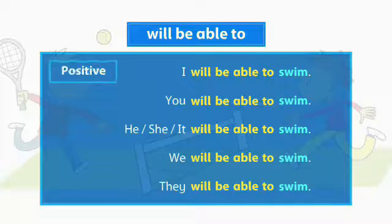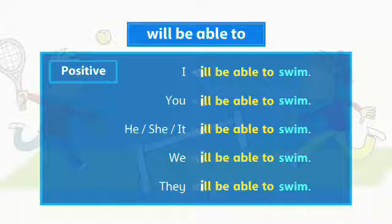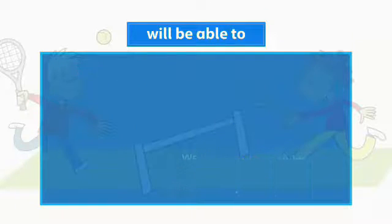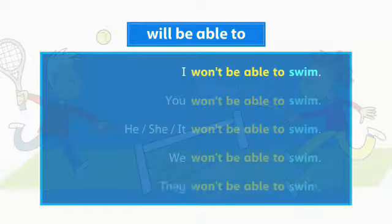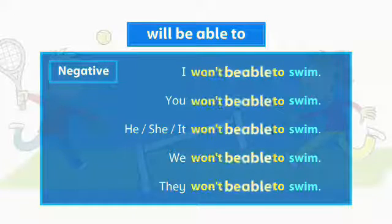We form positive sentences about ability in the future with will be able to. We usually use short forms of will, especially in spoken English. We form negative sentences with won't be able to, like this.